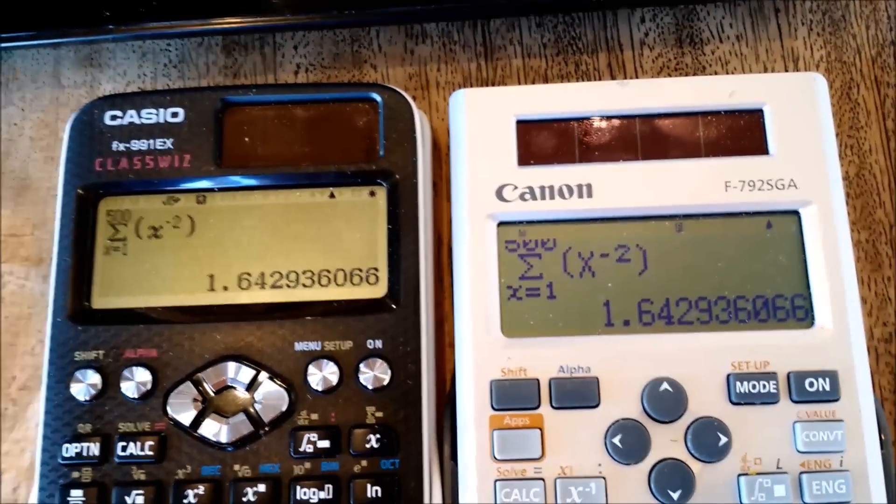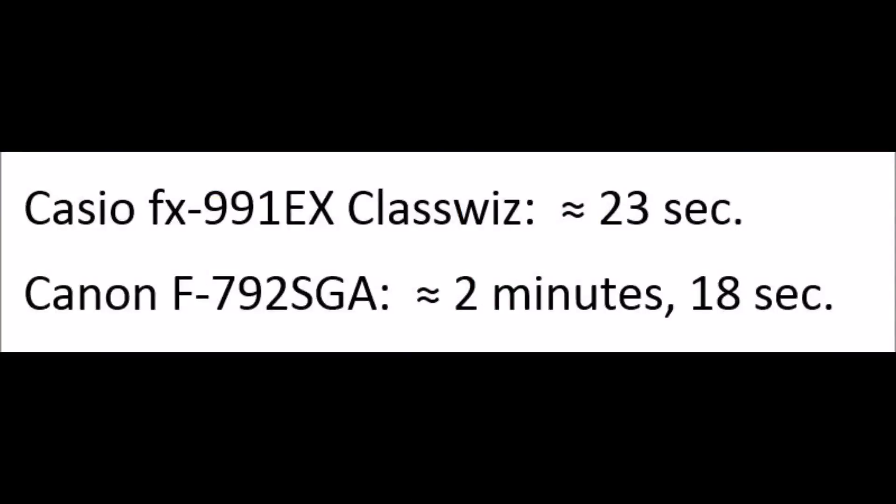There we go, that's the answer. And the final results are the Classwiz took about 23 seconds, the Canon took 2 minutes and 18 seconds. Once again, that's the greatest difference.